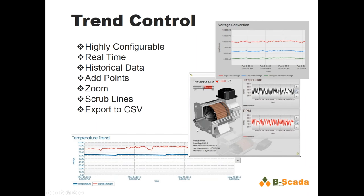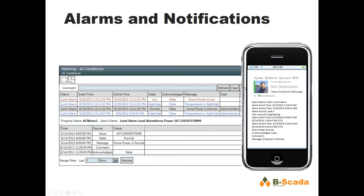We have a very powerful trend control that we've been working on for many years. This trend supports multiple pens — you can add pens at runtime. It shows live or historical data. You can drop scrub lines, export the points to a CSV file, and capture the trend as an image to use in a report.